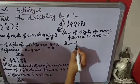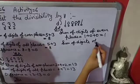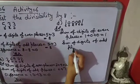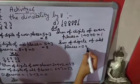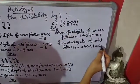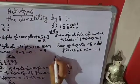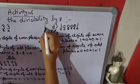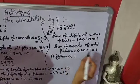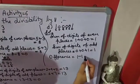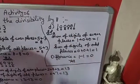The sum of digits at odd places: digits are 0, 0, and 1, which is also 1. Finding the difference: 1 minus 1 equals 0, so this number is also divisible by 11.